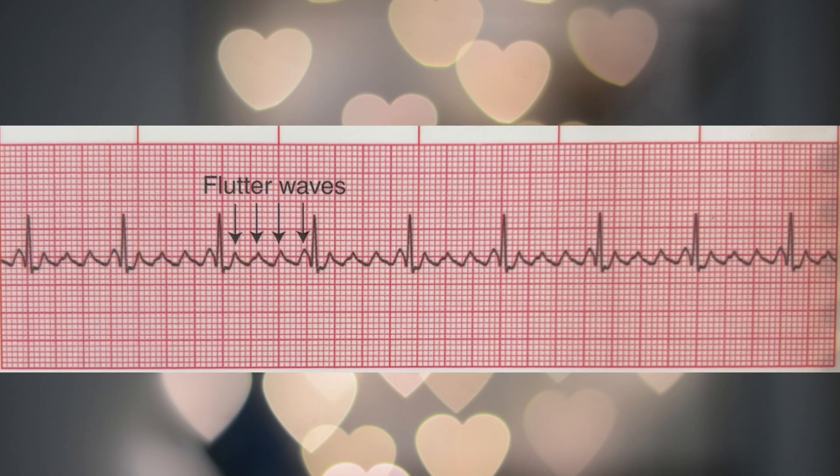The answer is atrial flutter, also known as AFlutter. This rhythm appears as flutter waves or a sawtooth appearance. The AV node conducts at a ratio of two to one, three to one, or four to one. Sometimes AFlutter can be the initial findings of cardiac disease. Some reasons for AFlutter can be caused by stress, hypertension, chronic heart disease, or hypoxia.